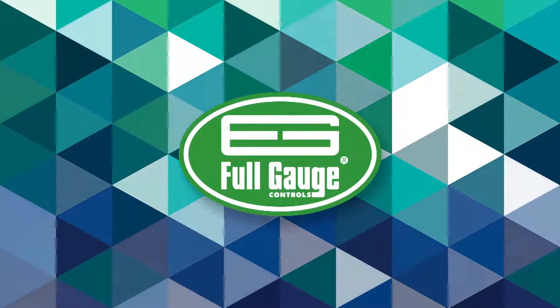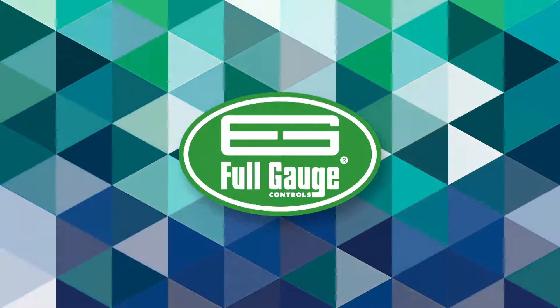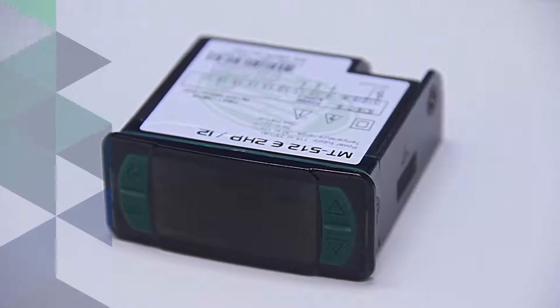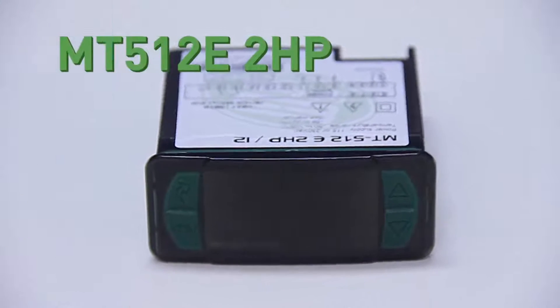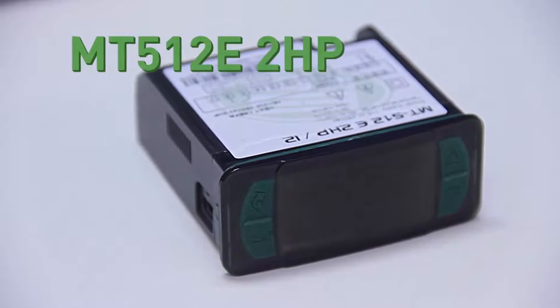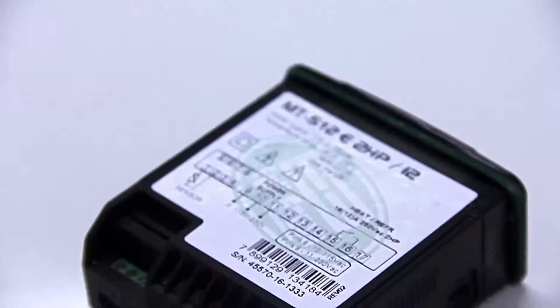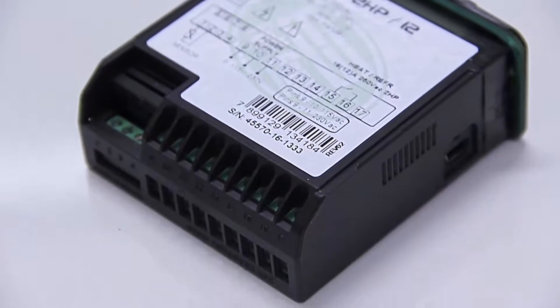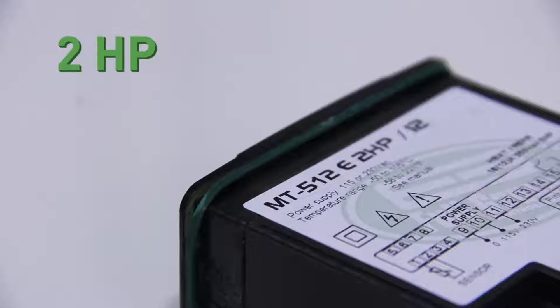Full Gauge Controls introduces the MT512E 2HP instrument of the Evolution line. It's a highly versatile product which can be applied in cooling and heating controls. Through its powerful relay, it picks up loads up to 2 horsepower.